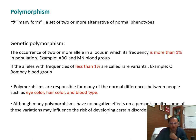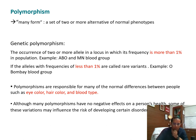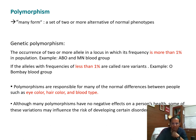Polymorphism literally means 'many forms' — a set of two or more alternatives of normal phenotypes. Genetic polymorphism is the occurrence of two or more alleles at a locus with a frequency greater than one percent in the population; examples are the ABO group and MN group. If an allele's frequency is less than one percent, it is called a rare variant — for example, the Bombay blood group. Polymorphism can cause differences in eye color, hair color, and blood type. It generally has no negative health effect, but some may influence the risk of developing certain disorders.